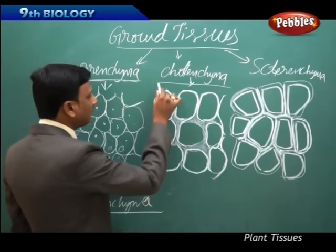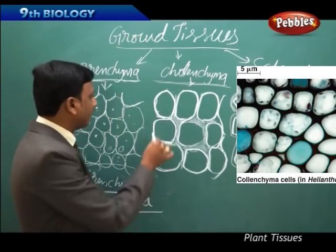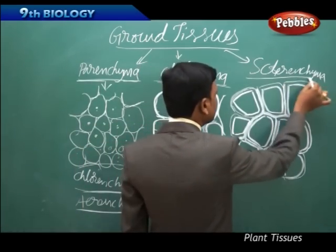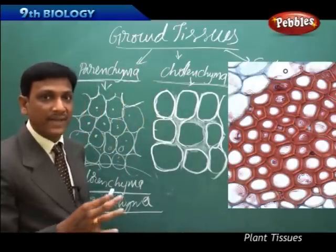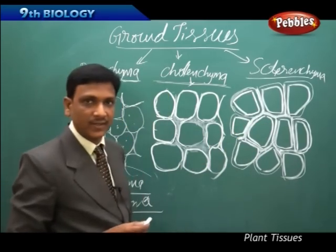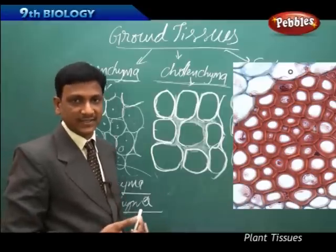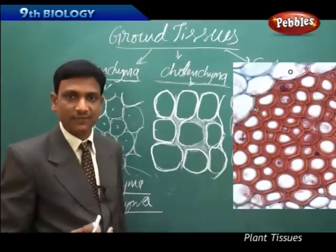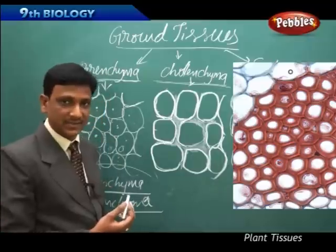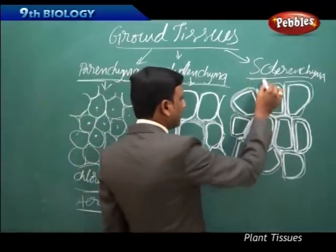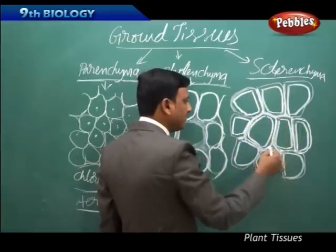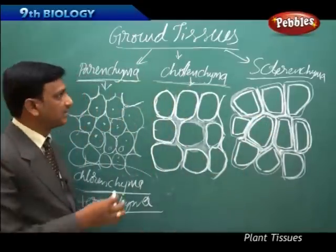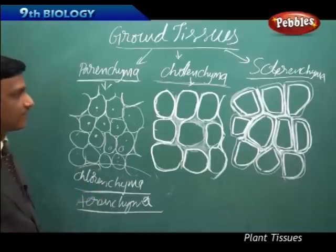Colenchyma cells have somewhat thicker walls and are more elongated compared to parenchyma cells. Sclerenchyma cells have very thick walls and are very compactly packed with no air spaces between them. They form the hard wood of a plant — when you cut a tree trunk, the hard wood at the center is sclerenchyma. Flowers, fruits, and leaves are soft because they are made of softer tissues, but sclerenchyma is the hard tissue with thick cell walls and no air spaces.